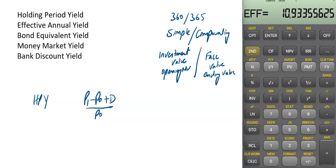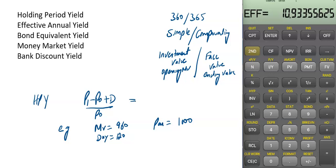Holding period yield does not depend on any specific period — it can be 90 days, 120 days, or 180 days. For example, we are investing in a T-bill with a market value of 960, par value (face value) of 1000, and 120 days. The holding period yield is: closing minus opening, with no dividend, so 40 divided by 960, which is 4.1667%.